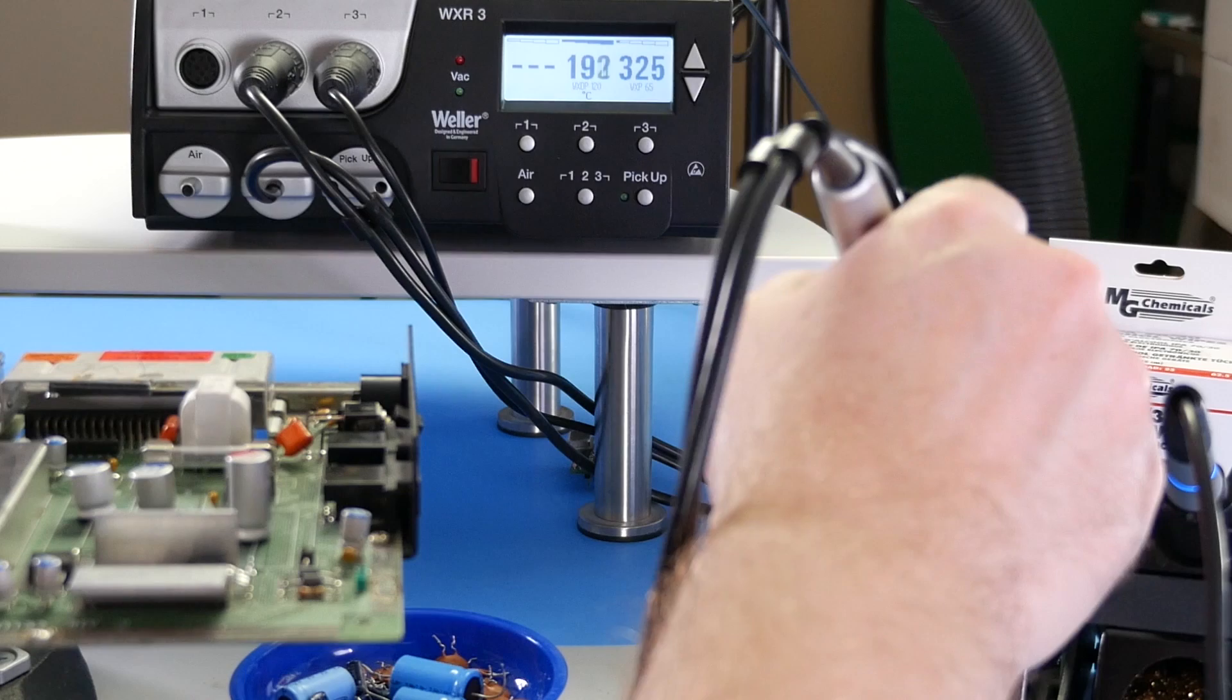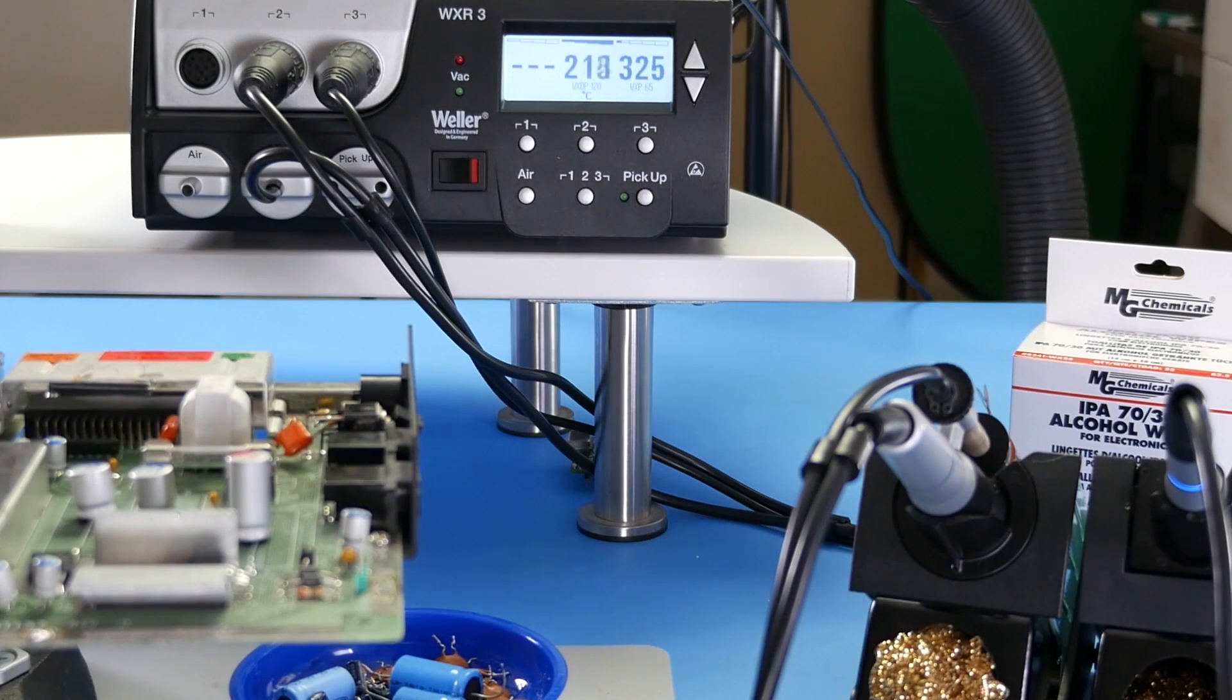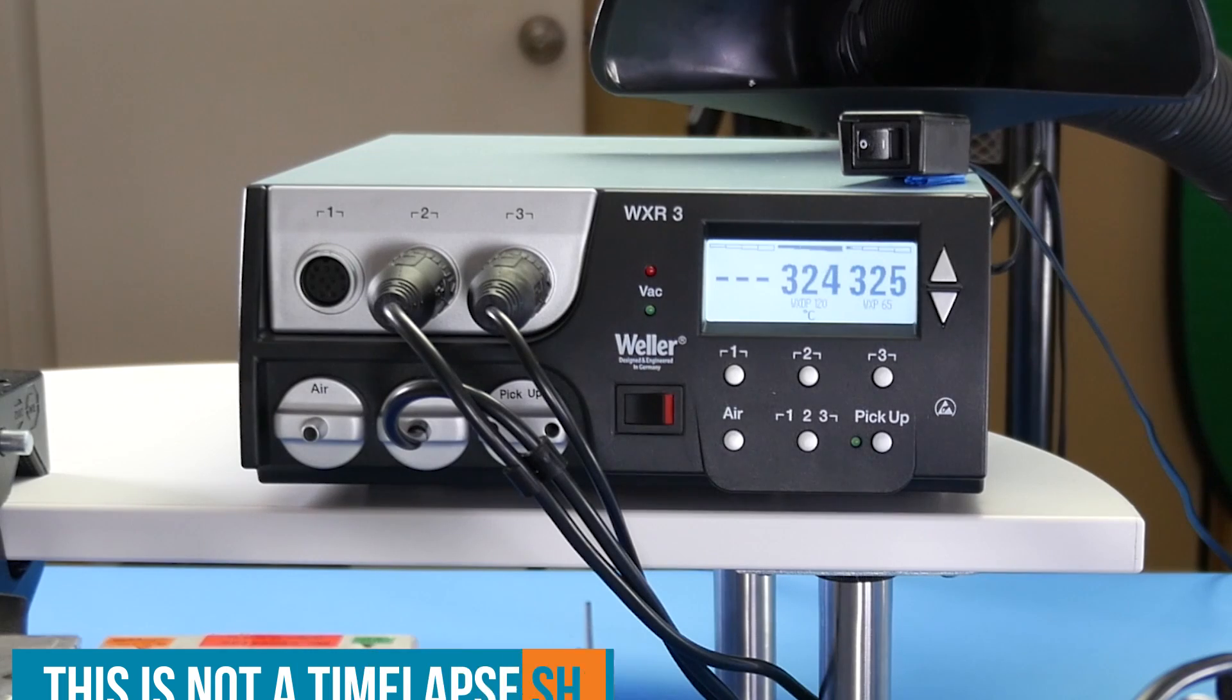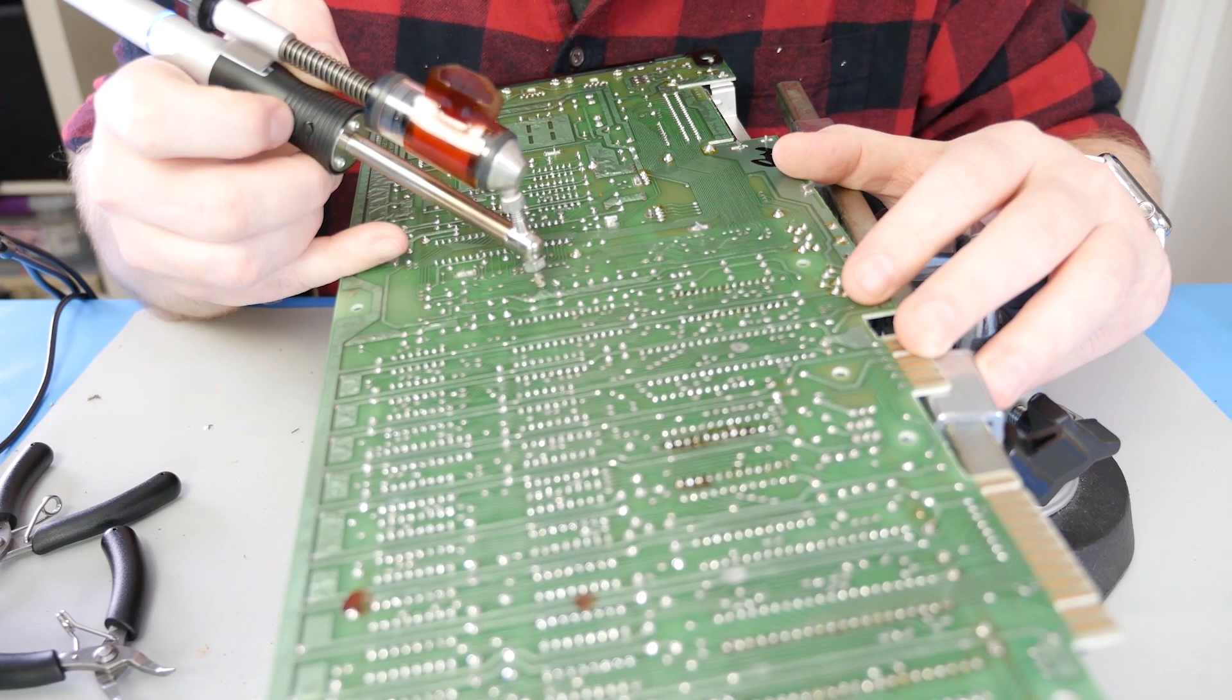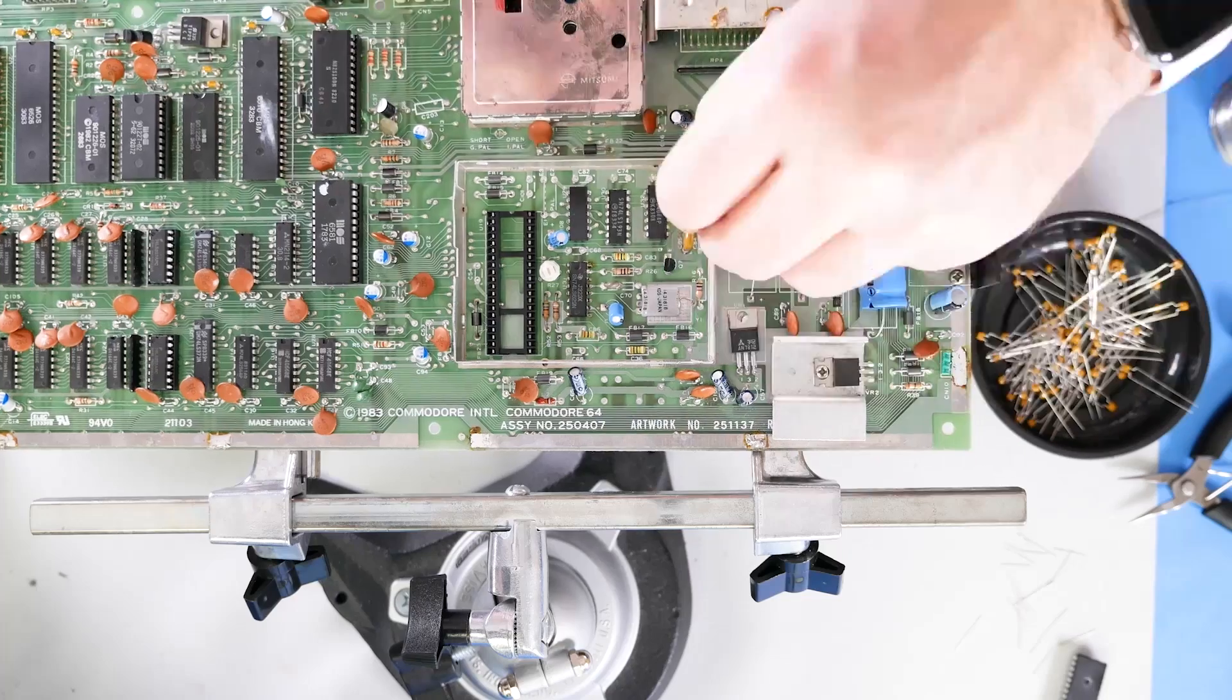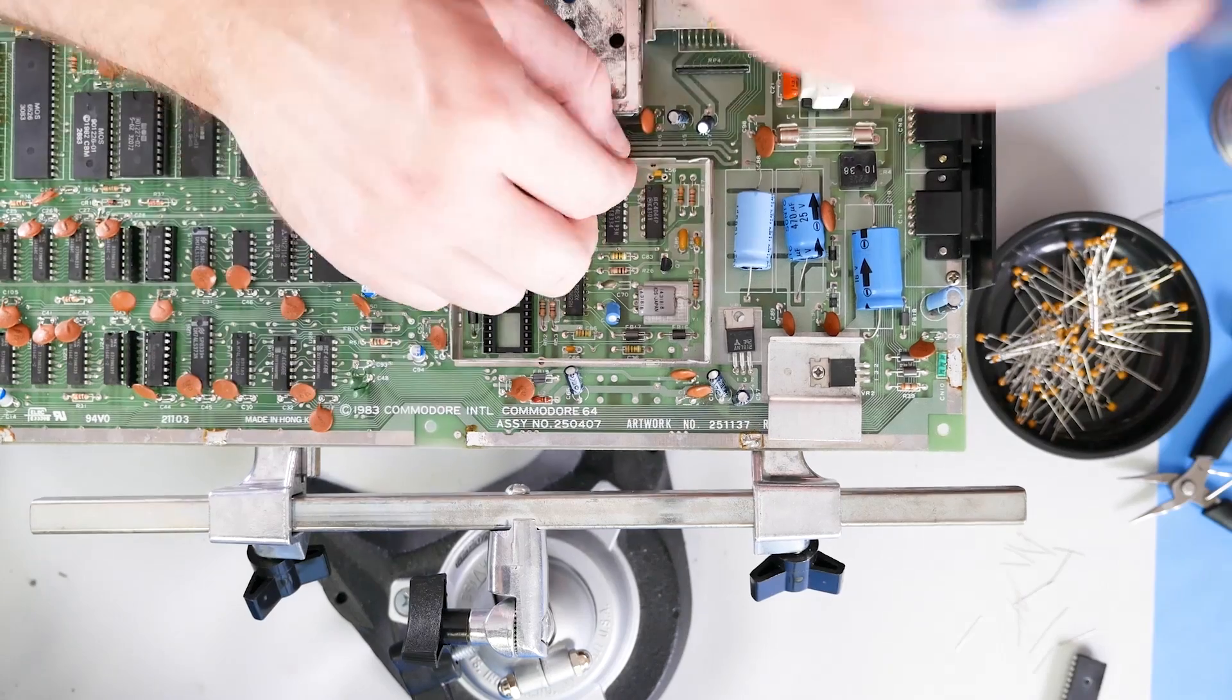The bad news is my desoldering tool cooled down while I was cleaning the VIC-2. The good news is it heats up from 180 to 350 degrees in a matter of seconds. Once it was up to temp, I removed about 10 ceramics and a few electrolytics. Putting the replacements back in took no time.